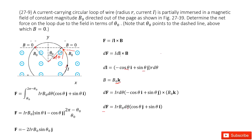We integrate both sides: the left side gives F, and the right side integrates dθ from θ-naught to 2π minus θ-naught. Because of mirror symmetry, this angle is also θ-naught, so the boundary on the other side is 2π minus θ-naught. Doing the calculation gives us the final answer.